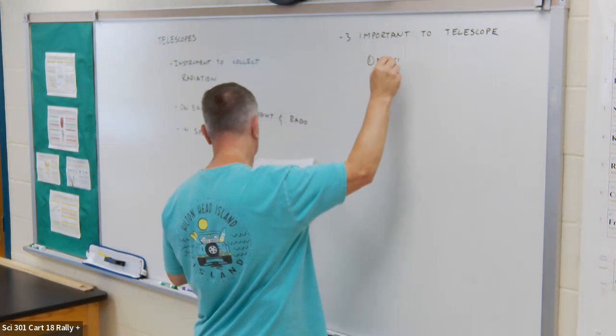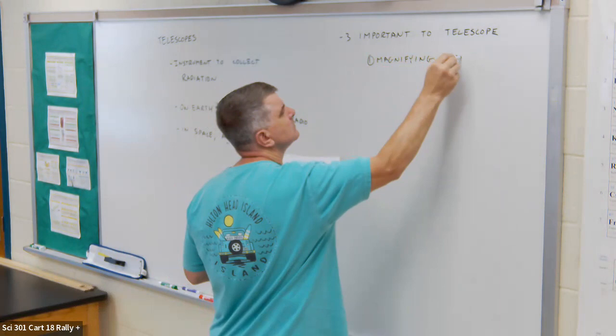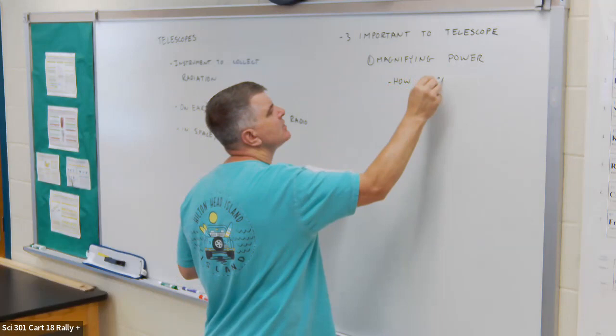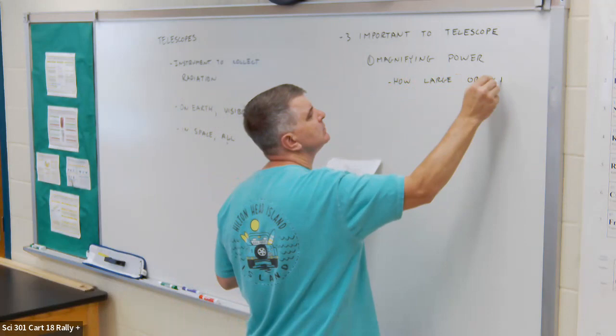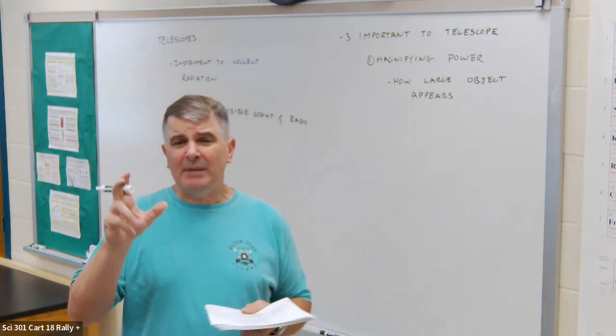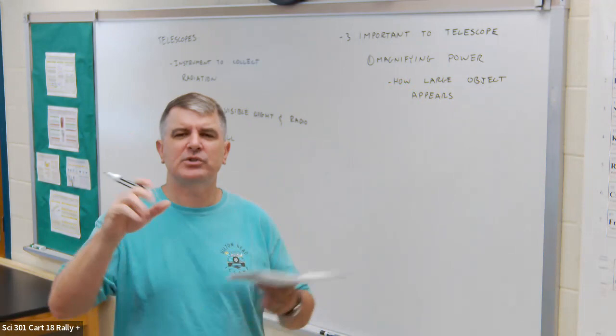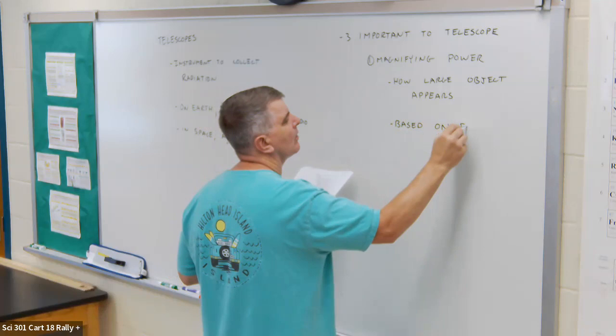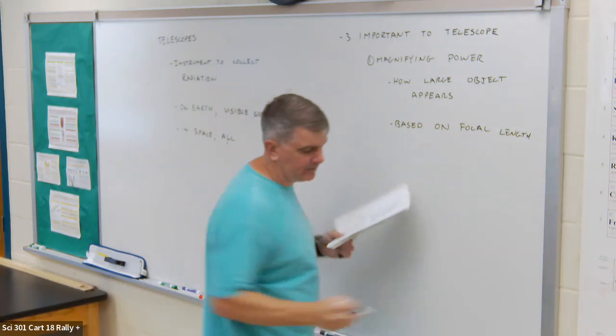So the first one, so-called magnifying power. Magnifying power refers to how big the object appears, so this is how large an object appears. And for early telescopes, this was important because the optics weren't very good, so you couldn't get a real detailed picture, so if you could make it bigger, you could see better. And this is based on focal length.